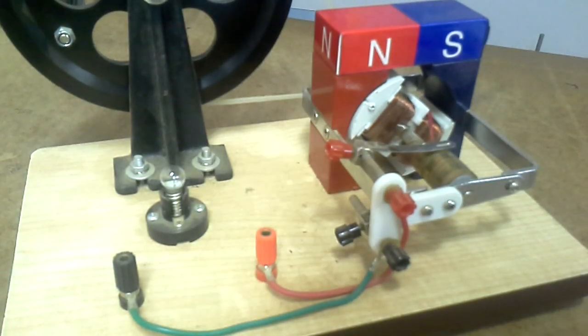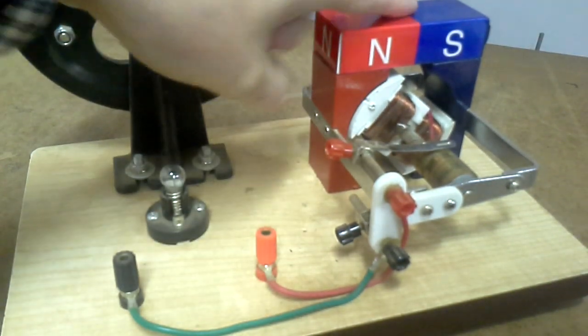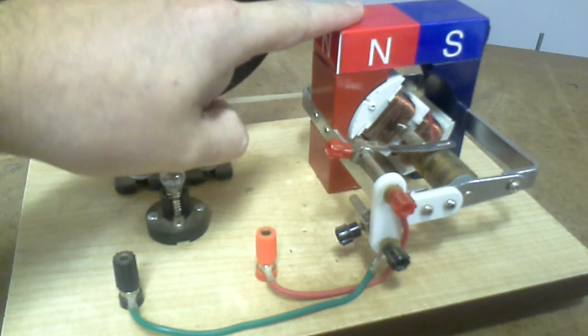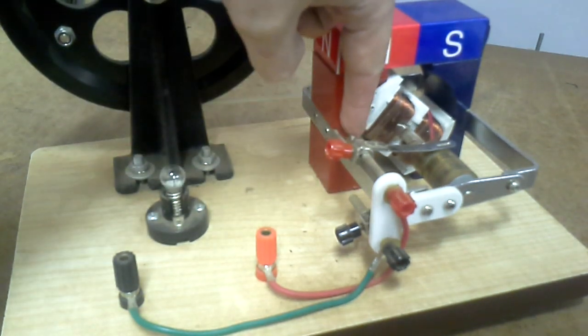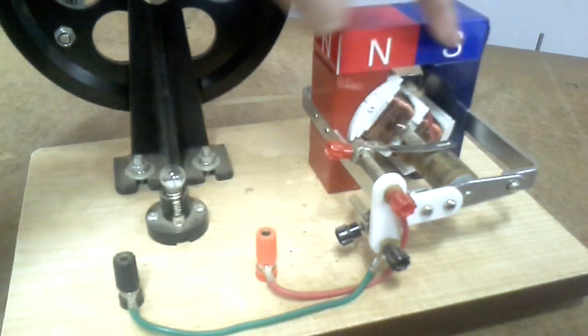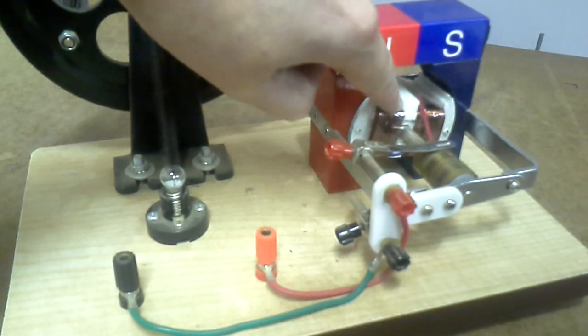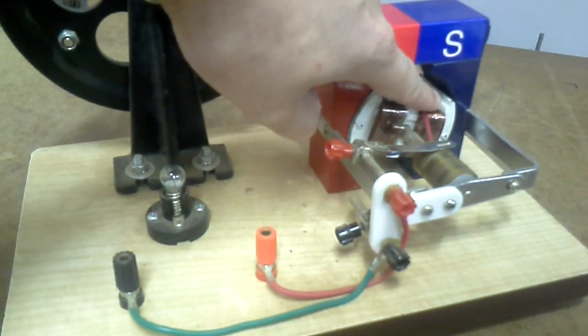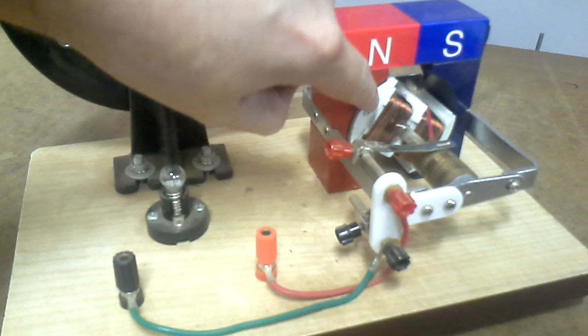I just want to give a quick demonstration of the AC generator. So here I've got a magnet and the magnetic field is going across from here to here, and I've got my coils of wire here that you can see, and then they're wrapped around this piece of iron here.